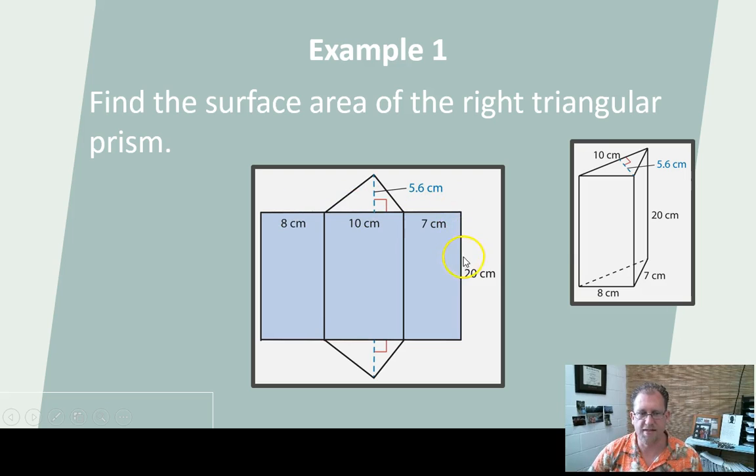And then the height of the rectangle is just the height of the prism here, 20 centimeters. So the rectangle is 25 by 20, and that's fairly easy math. And then I have two triangles here that I need to get the base, which is 10, and the height, which they've given me, is 5.6. One-half times base times height will give me the triangle. There are two of those. I just have to add it all together.